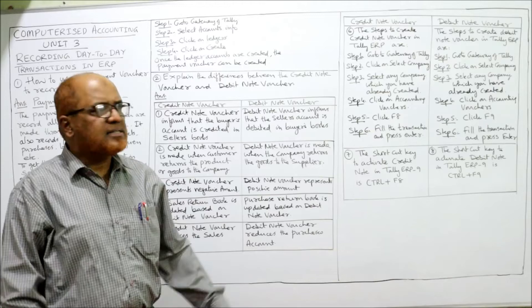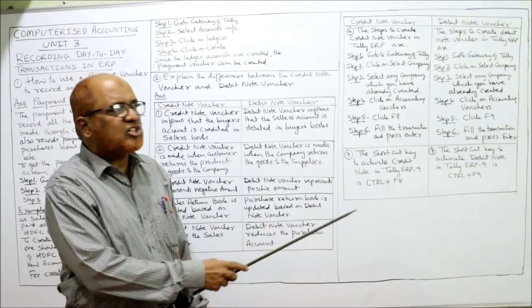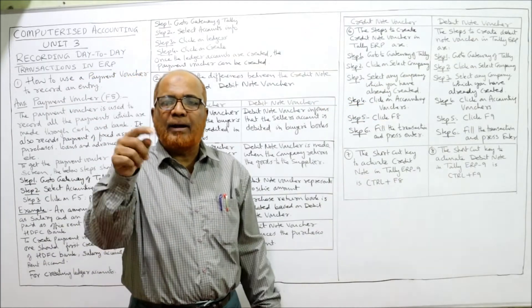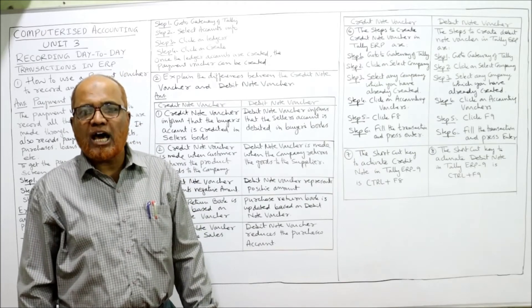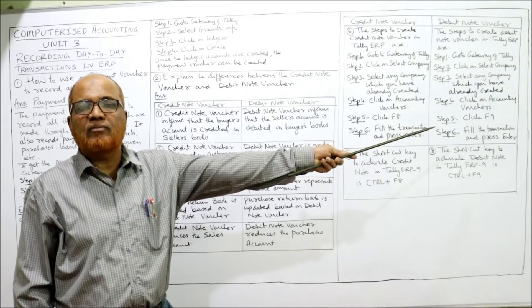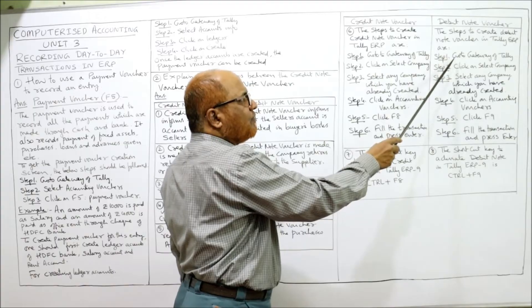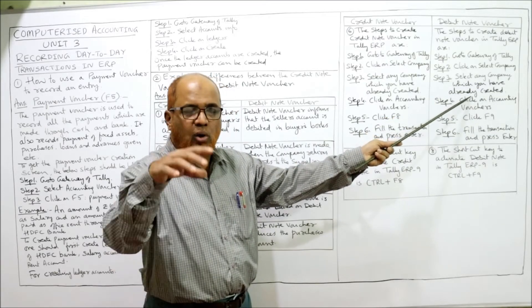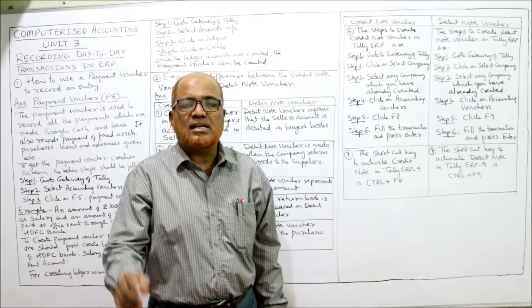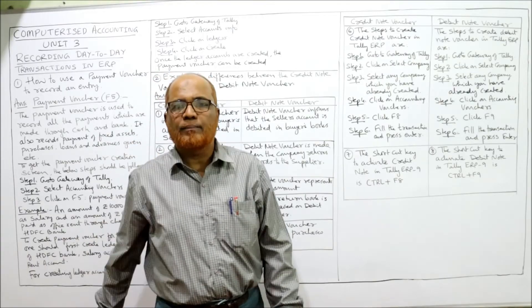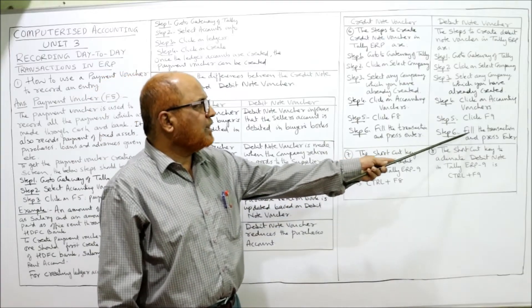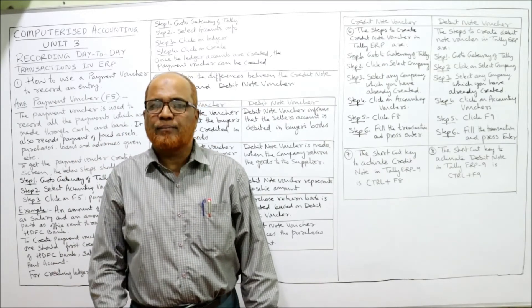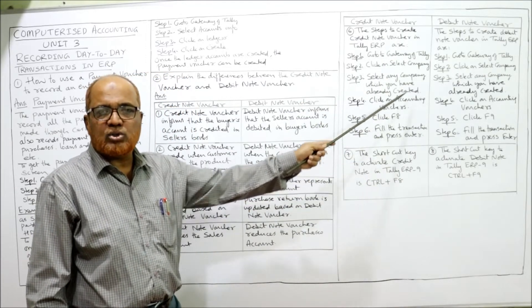The steps for the debit note voucher are exactly the same, except the function key is different. For credit note voucher the function key is F8; for debit note voucher the function key is F9. Go to Gateway of Tally, select the company, click on Accounting Vouchers, press F9, fill in the transaction, and press Enter to save.